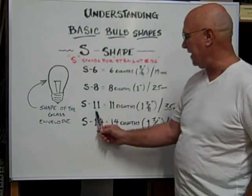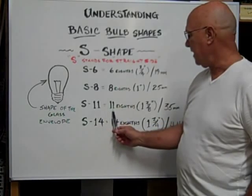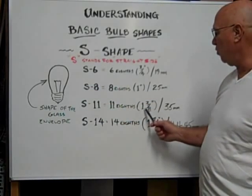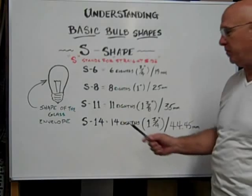An S-11 is 11 eighths across the diameter, which is equivalent to 1 and 3 eighths inches or 35 millimeters.